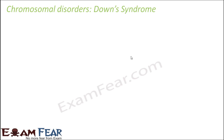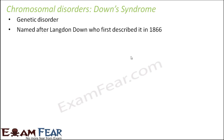Now let us talk about chromosomal disorders, and we will first talk about Down syndrome. It is a genetic disorder due to some abnormality in the chromosome, whether in structure or number. It is named after Langdon Down, who first described it in 1866, and so it was named Down syndrome.